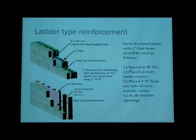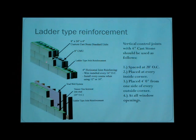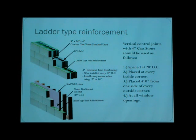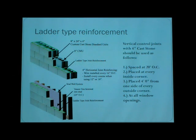Here is the specification for ladder pipe reinforcement for 8-inch by 24-inch by 4-inch custom cast stone standard units and the 8-inch CMU. The vertical joints for this installation should be used as follows: ladder pipe reinforcement spaced at 20 feet on center, placed at every inside corner, placed at 4 feet from one side of every outside corner, and at all window openings.